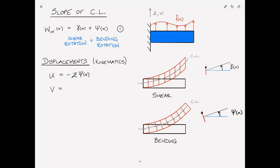V is the displacement in the y direction, which is just zero since we're not considering displacements in the y direction. And w, the transverse displacement in the z direction, is just w(x). This is the same displacement field as for an Euler-Bernoulli beam. The only difference is that for Euler-Bernoulli, the slope of the center line is exactly equal to the bending rotation angle. We'll label these equations 2, 3, and 4.